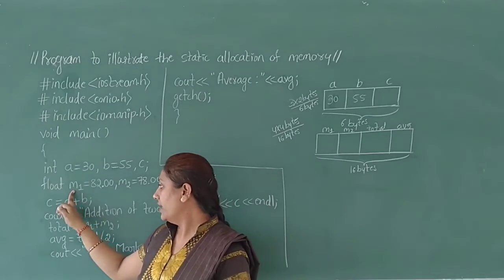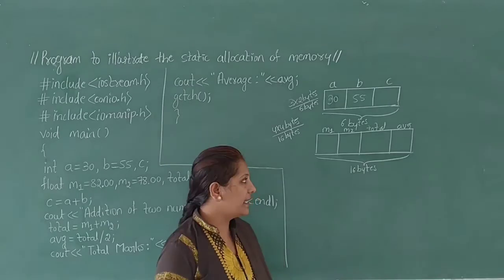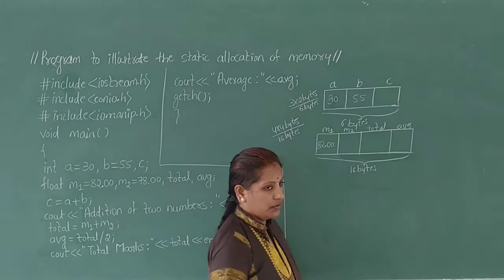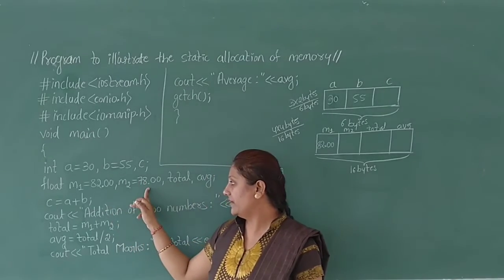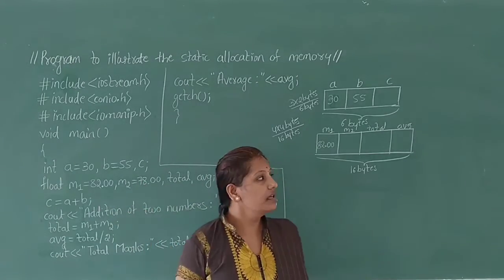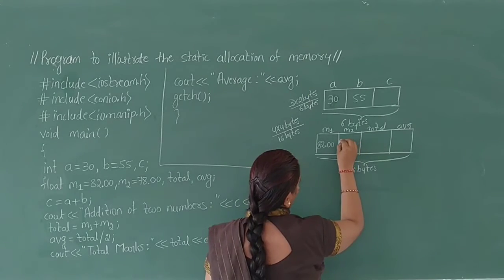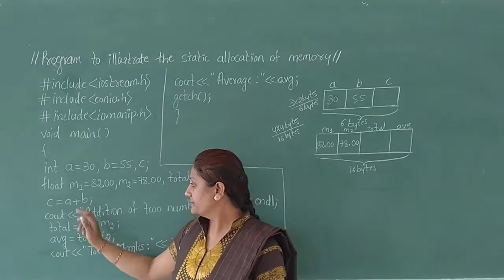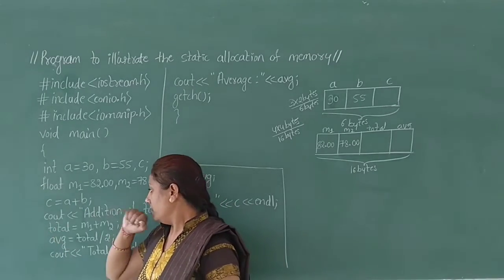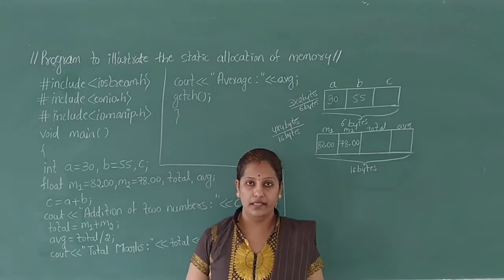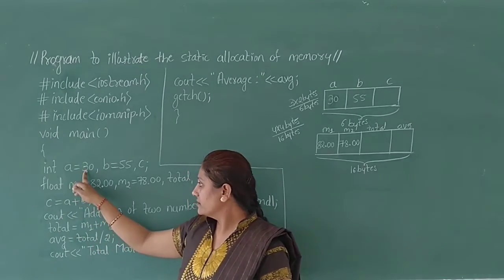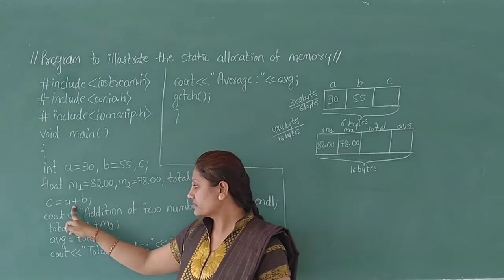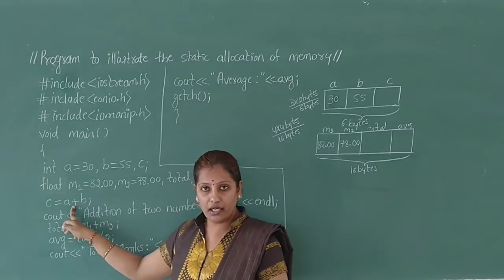Variable m1 is initialized with the value 82.00, stored in the memory location of variable m1. Variable m2 is initialized with the value 78.00, stored in the memory location of variable m2. Next, C = A + B. The value of A is 30 and the value of B is 55. It adds A and B using the binary arithmetic operator plus.